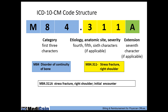Here's what an ICD-10 code actually looks like. The first element is the category — for example, M84 for disorder of continuity of bone. After the decimal, the next digits cover etiology, anatomic site, and severity, where applicable. Not all codes will go to all seven digits. The seventh digit, when applicable, is the extension. For example, M84.311A designates a stress fracture of the right shoulder at the initial encounter — the M84 is disorder of bone, 311 is stress fracture of the right shoulder, and A is initial encounter.